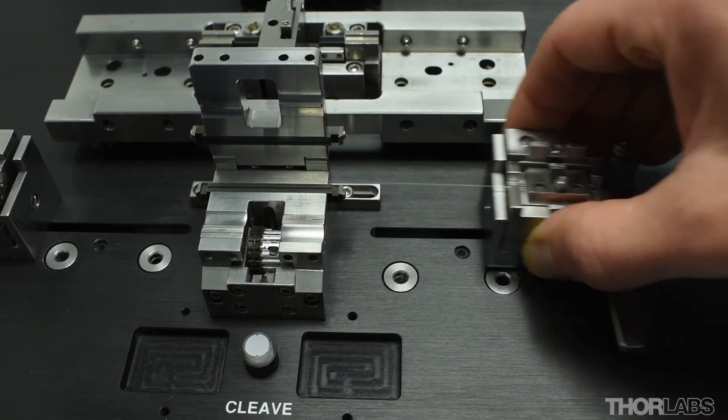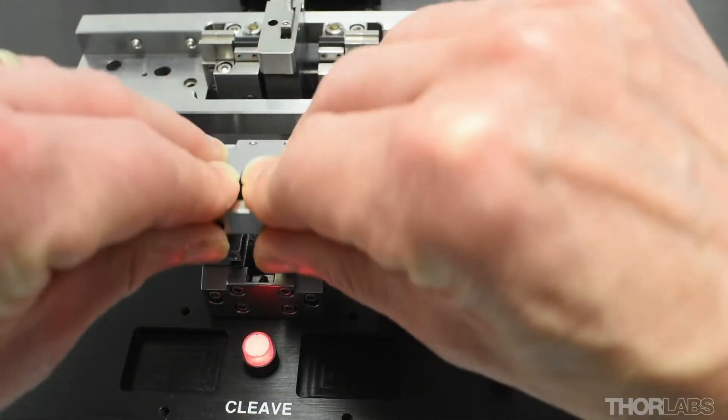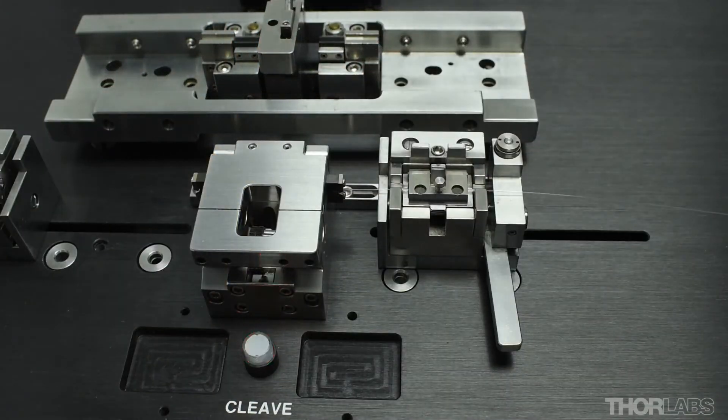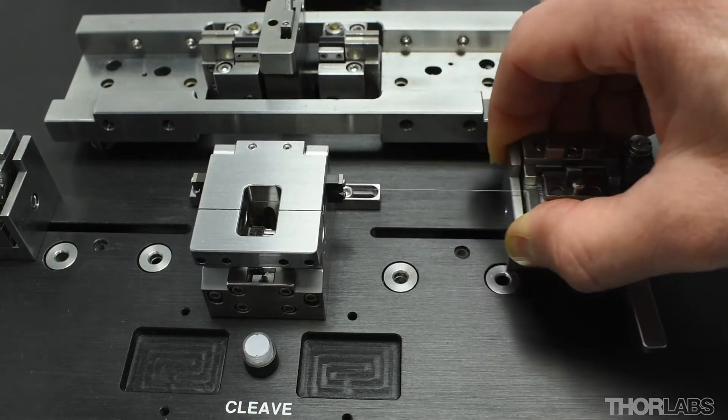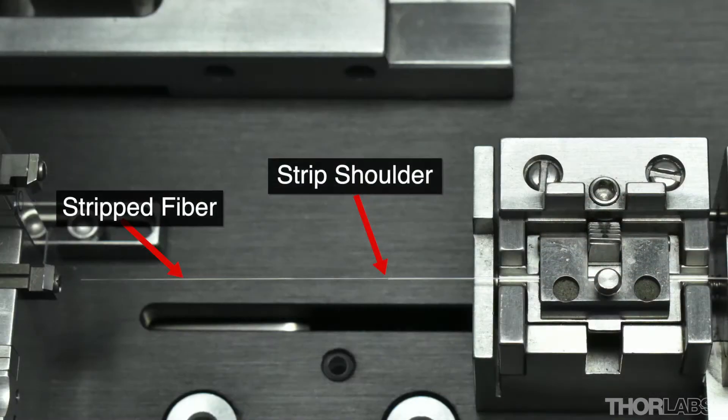This video will demonstrate how to strip using an FFS2000. The thermomechanical stripping process removes the coating without scratching or abrading the underlying glass surface and so will produce a higher strength splice.